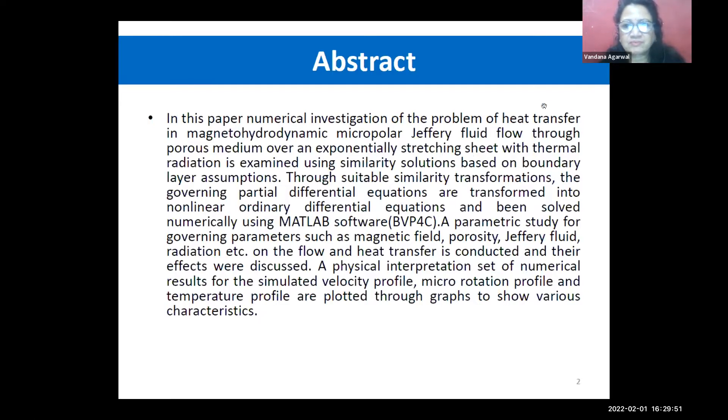A parametric study for different parameters such as magnetic field, porosity, Jeffrey fluid, and the radiation parameter on the flow and heat transfer is conducted. The effects were discussed. A physical interpretation set of numerical results are obtained for the velocity profile, micro rotation, and temperature profile, and the graphs are plotted through which various characteristics are shown. Based on that, certain conclusions have been made.